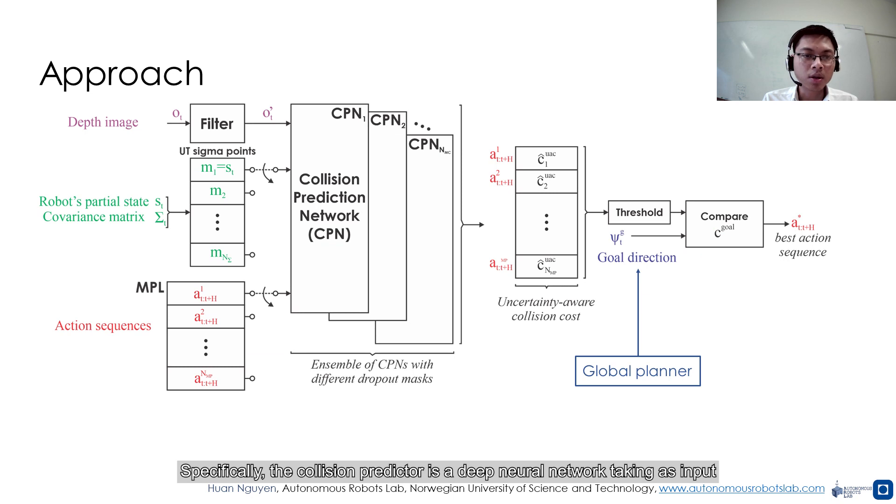Specifically, the collision predictor is a deep neural network taking as inputs the current depth image, the estimated linear and angular velocities, the associated covariance, and a fixed motion primitive library based on forward velocity and steering angle commands.